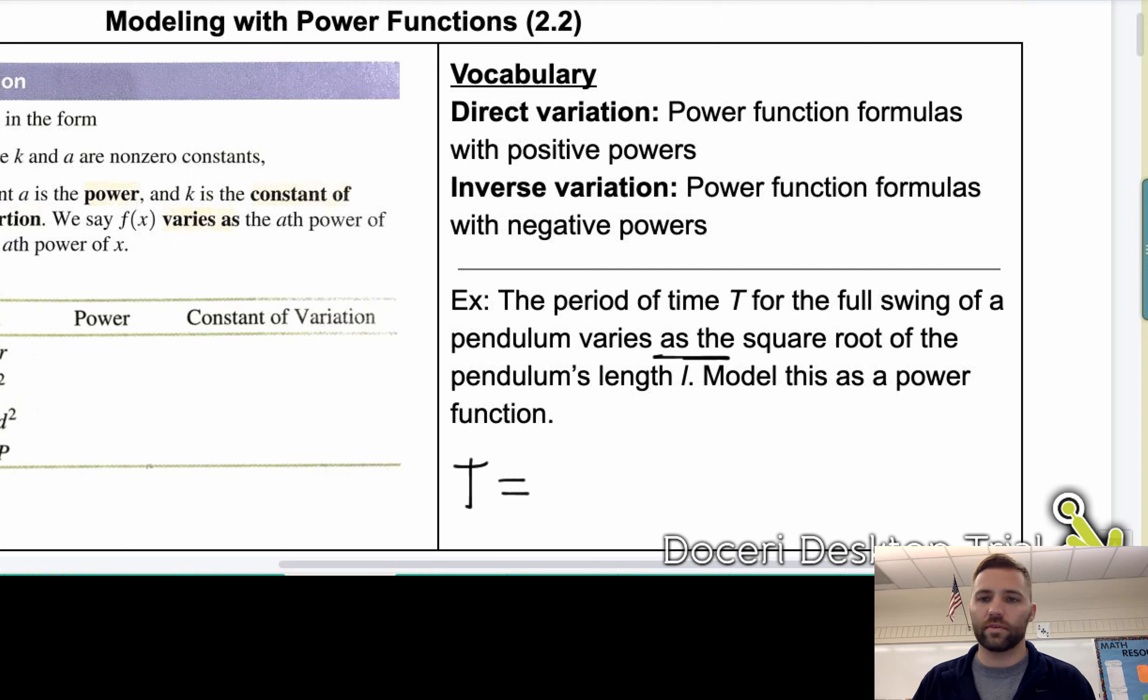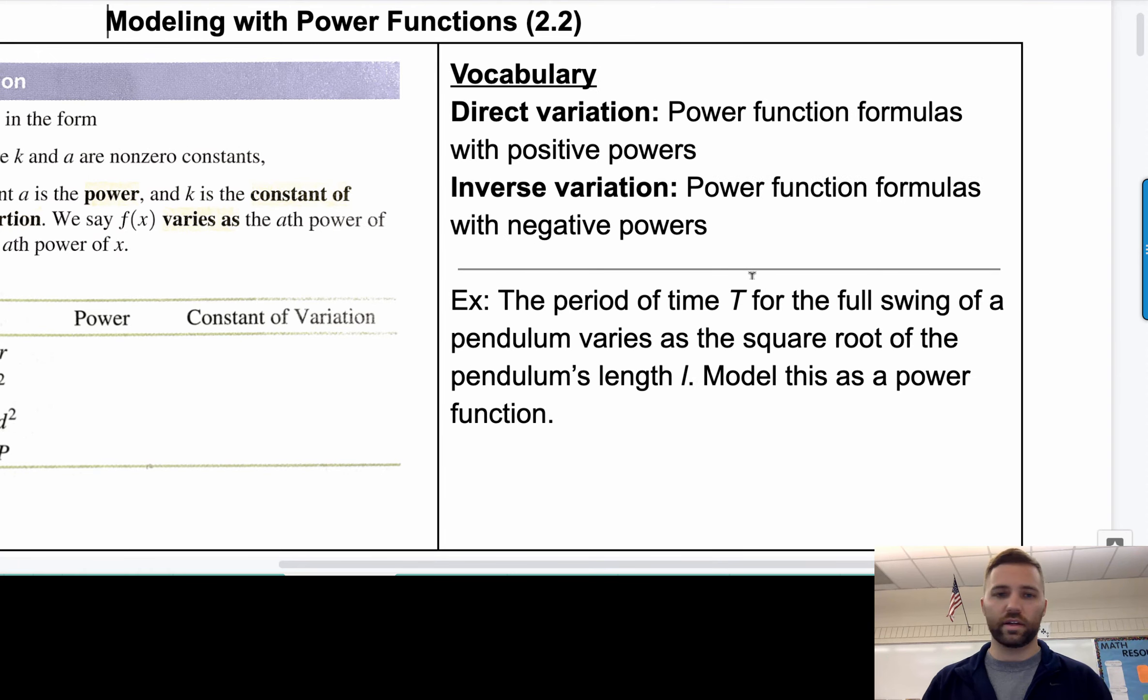So t for the full swing of a pendulum, we're not really worried about that when we're writing the formula, varies as the, so that phrase right there tells me it's going to be equals to the square root of the pendulum length. And it also tells me that when I read that varies as the, I need a constant of variation in there. So k times the square root of L is how that's written. If you're not convinced that it's a power function, you could write this as k times L to the one-half power. That would be fine. All right. So let's go on to the next thing here.